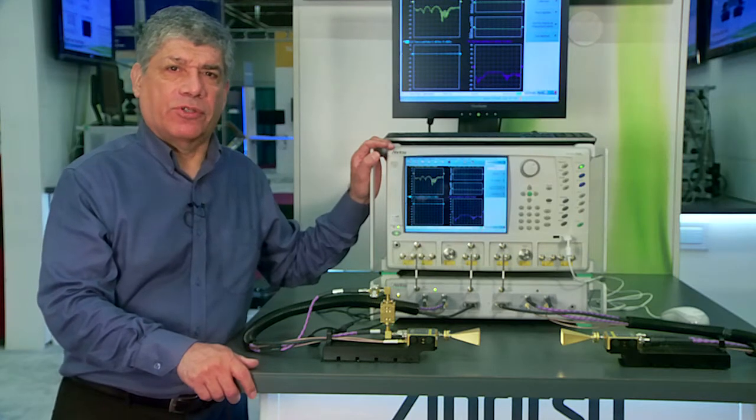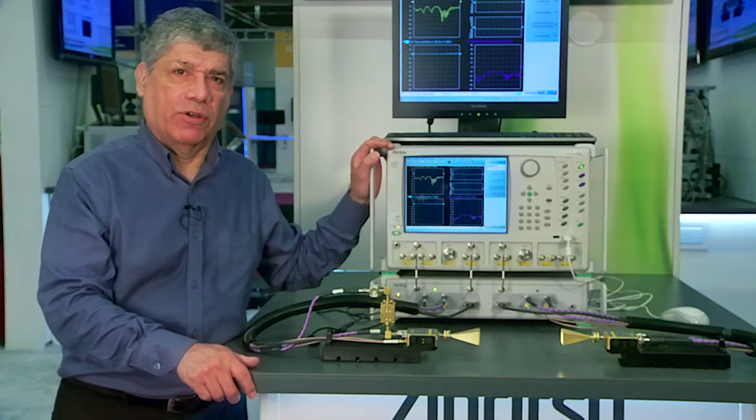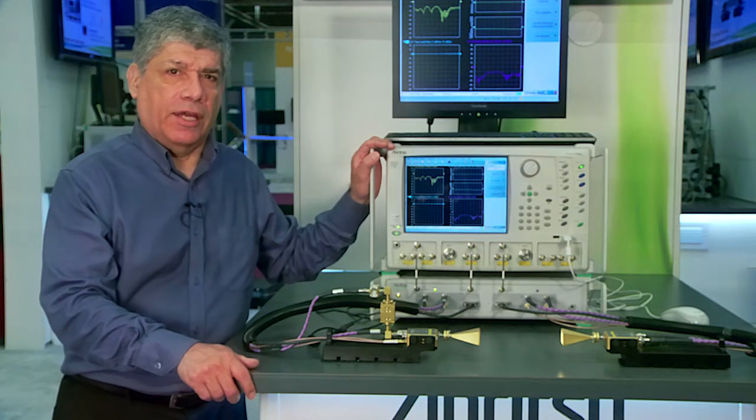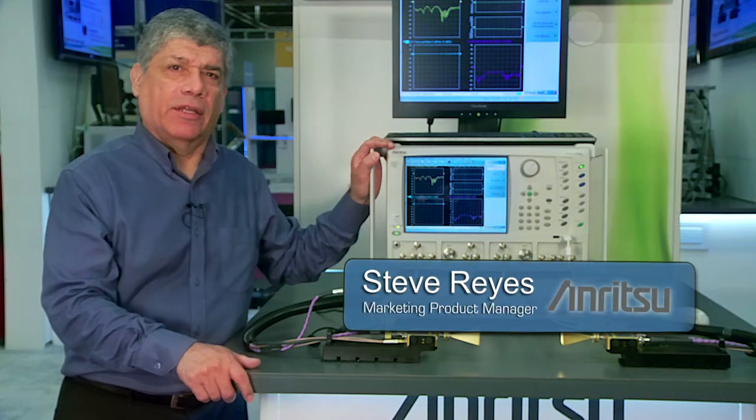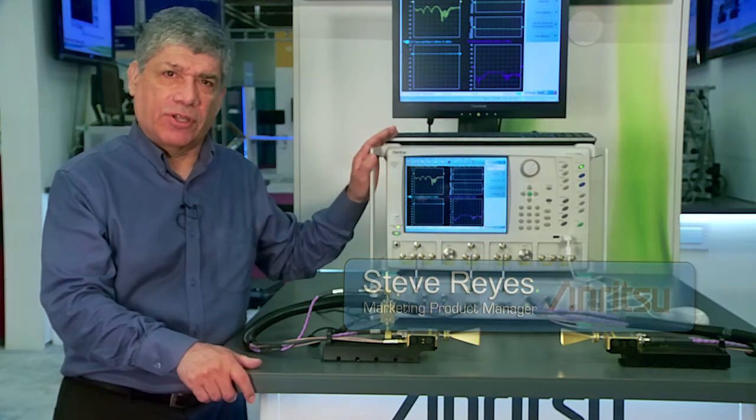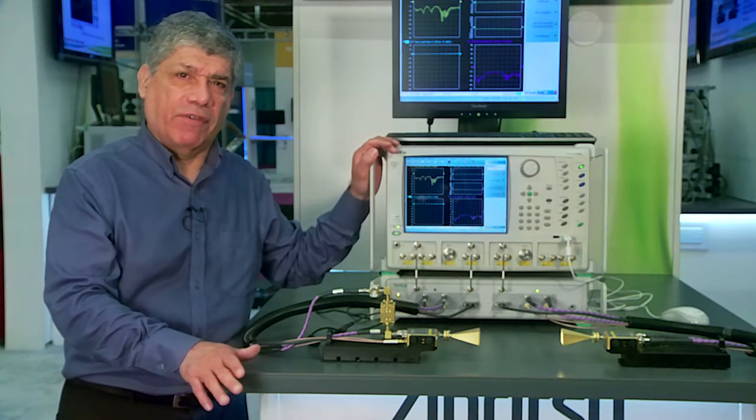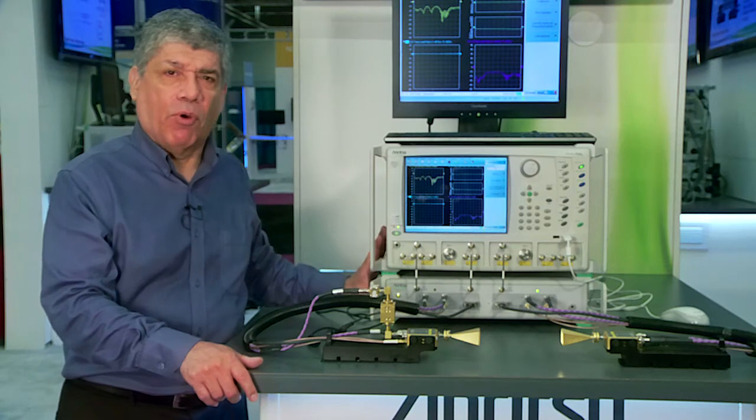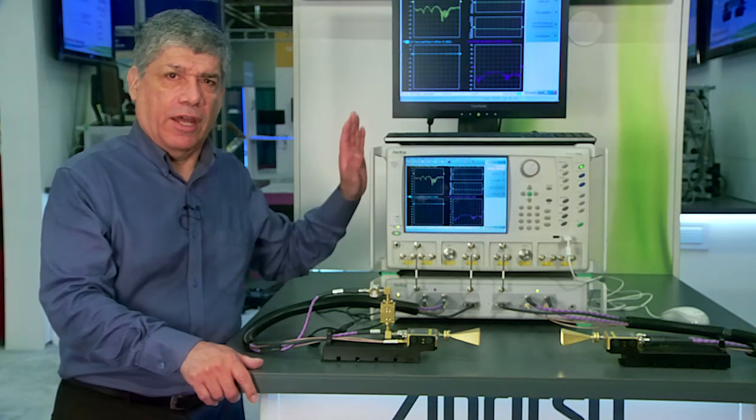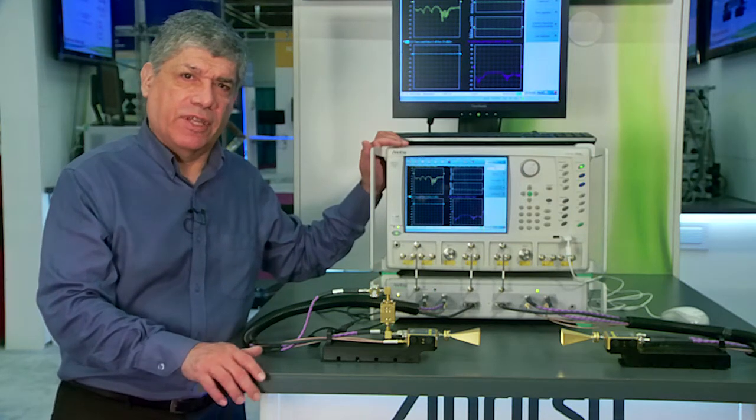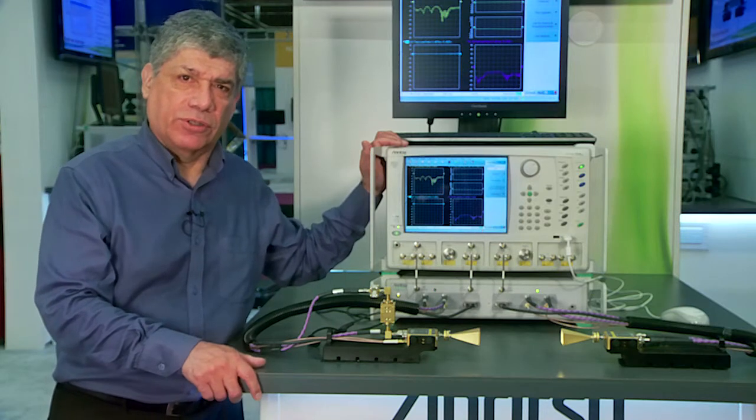We have here the VectorStar banded millimeter wave version system. Similar to the broadband system, we have a VectorStar that operates typically in the 70 kilohertz to 70 gigahertz range with the broadband test set, and the broadband test set drives the Anritsu millimeter wave modules.